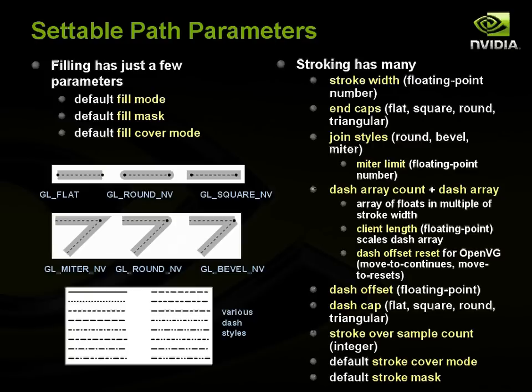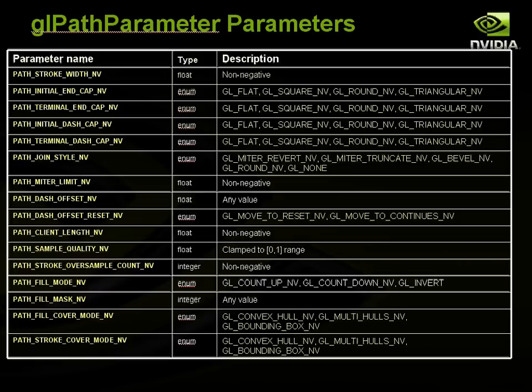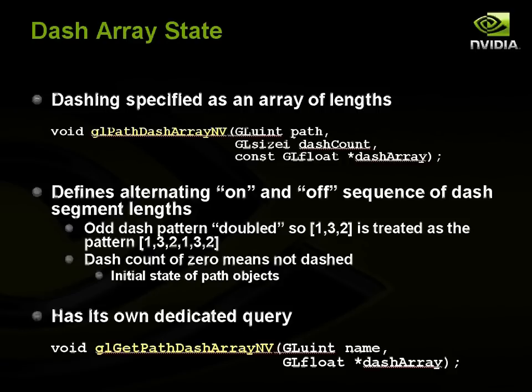Path objects also allow setting various parameters. For filling, there are a few parameters: the default fill mode, fill mask, and fill cover mode. Stroking has many more parameters — stroke width, capping and join styles, and dashing settings. There's a parameter table showing parameter names, types, and valid value ranges. For dashing, there's a dedicated command where you specify an array of lengths in an on-off sequence, with its own dedicated query. Some examples of dashing content are also shown.